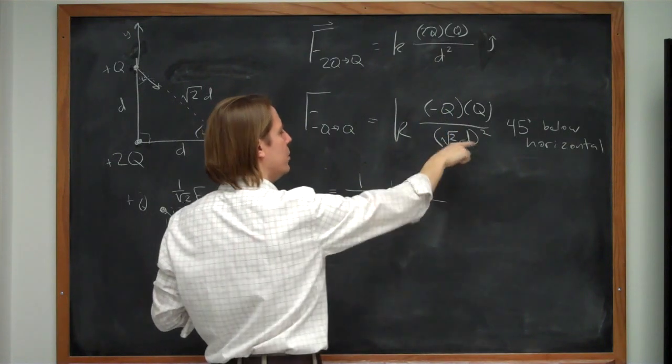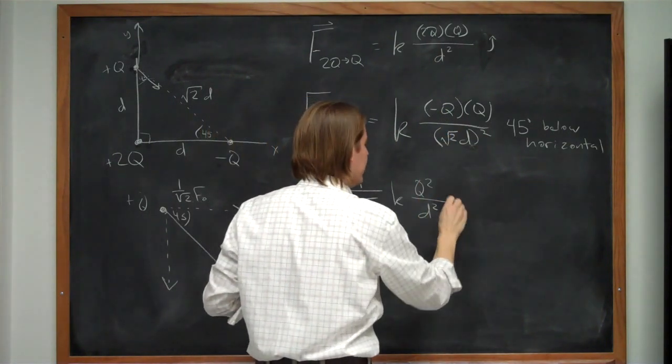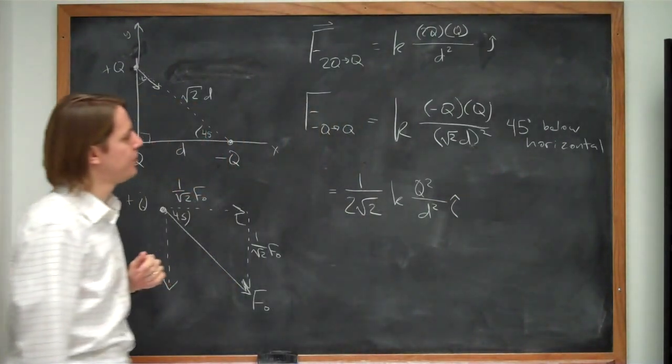We took out this 2. And then it's over d squared. And that is the component in the i-hat direction. In the x direction.